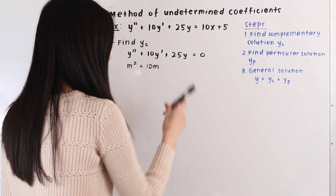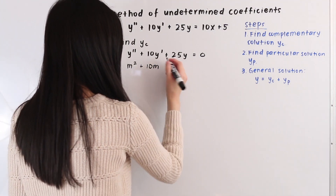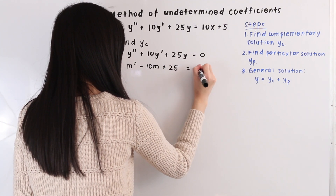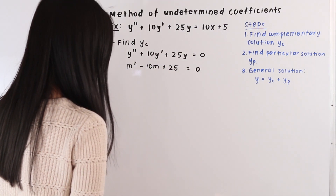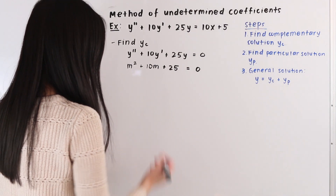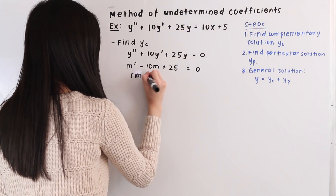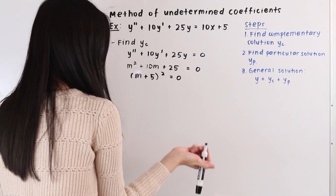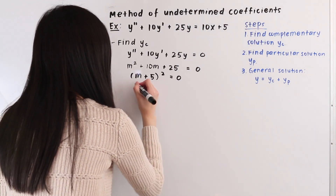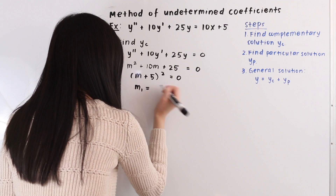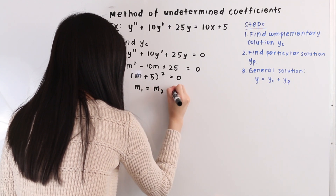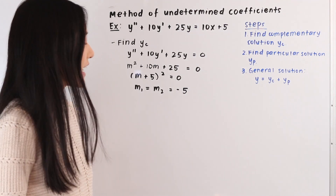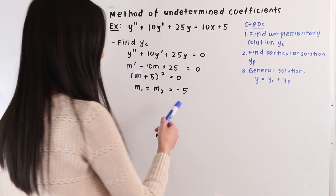And we just leave out y and write the constant term 25, so this is all equal to 0. The next thing we do is factor, so this factors to m plus 5 squared equals 0. We have our two roots: m1 equals m2 equals negative 5, so here we have a case 2 situation — a case of real repeated roots.